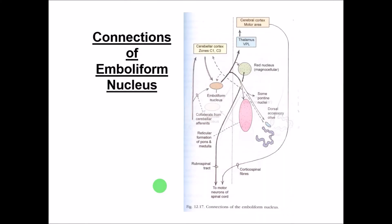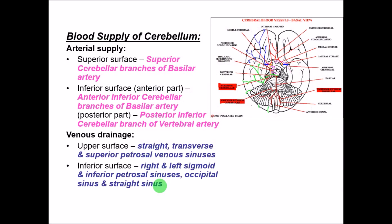For blood supply, the superior surface is supplied by the superior cerebellar artery, a branch of the basilar artery. The inferior surface is supplied by two arteries: the anterior inferior cerebellar artery from the basilar artery, and the posterior inferior cerebellar artery from the vertebral artery. For venous drainage, the superior surface drains into the straight, transverse, and superior petrosal sinuses; the inferior surface drains into the sigmoid sinuses, inferior petrosal sinus, occipital sinus, and straight sinus.